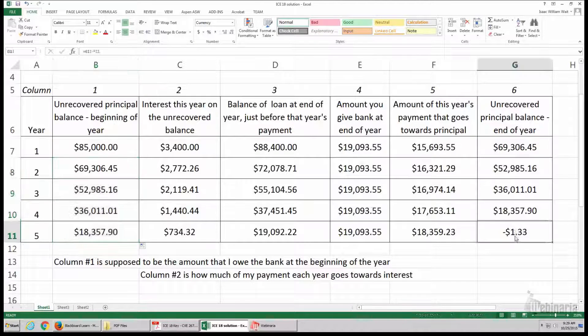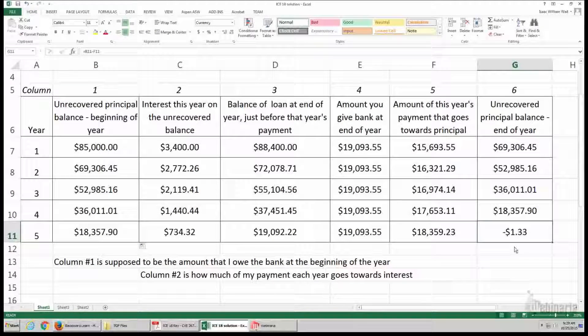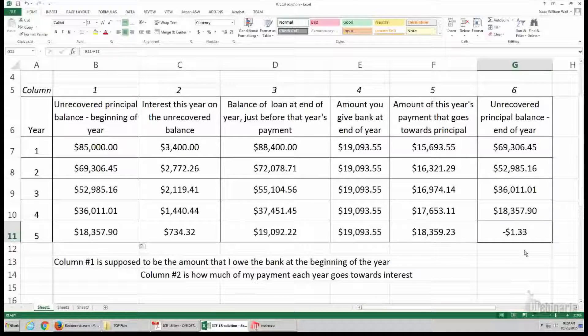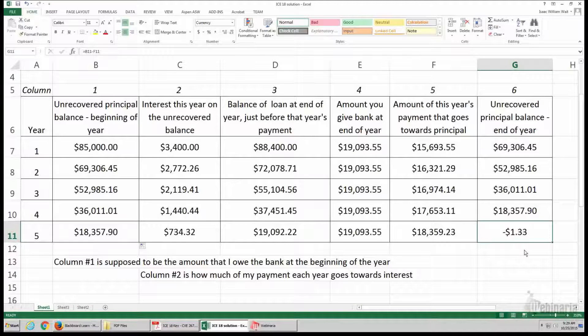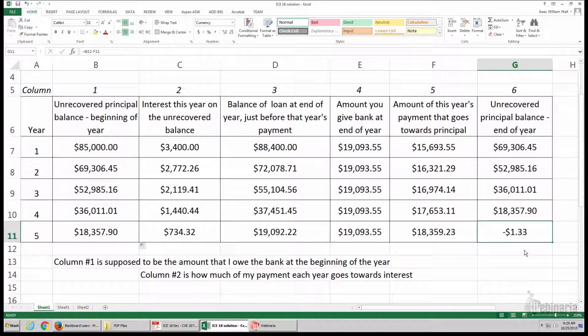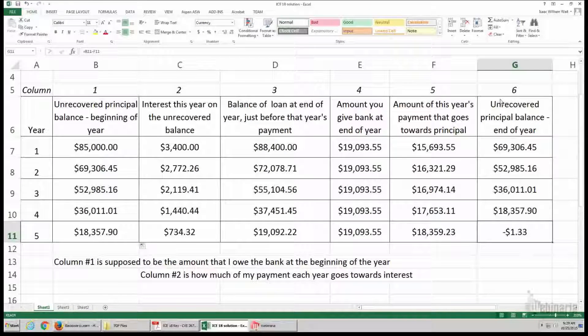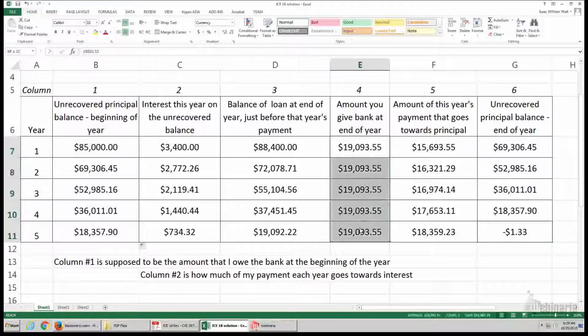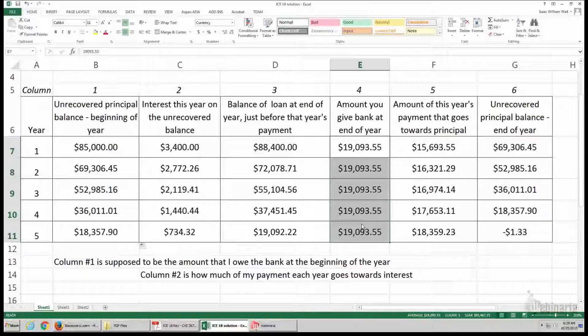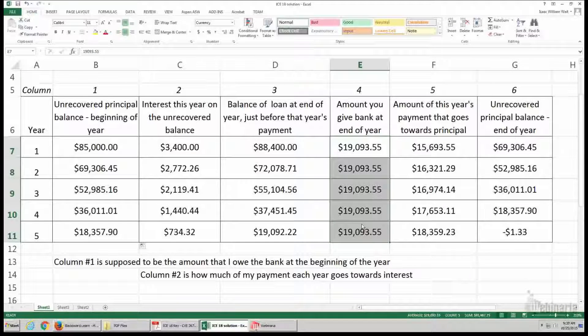So how come it doesn't go all the way to zero? That's a question I got several times. Isn't Excel supposed to be very precise? It should get us exactly to zero. So why is it? Yeah, we use the table lookup factors to find out how much our repayment should be. And the table lookup factor was only accurate to five digits.